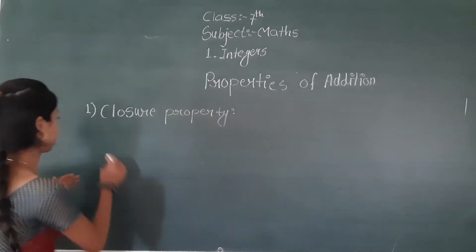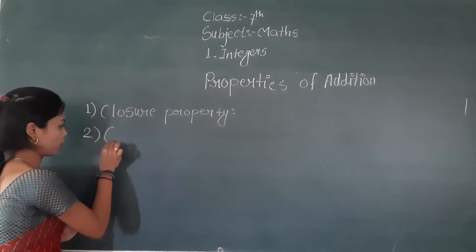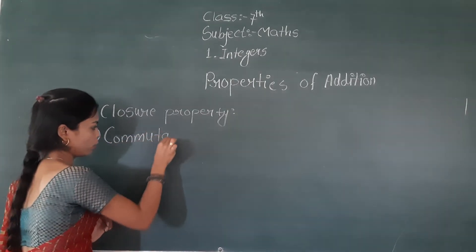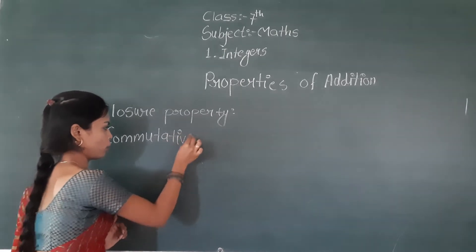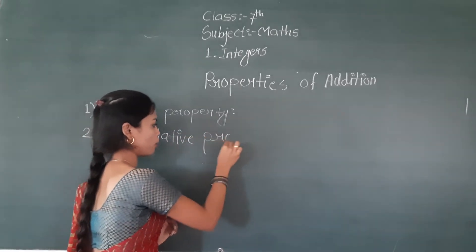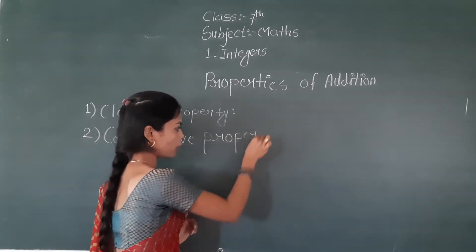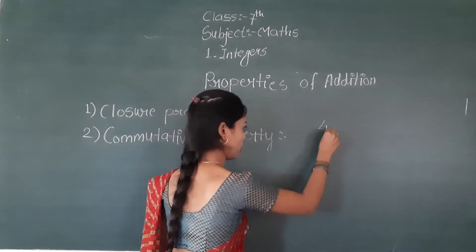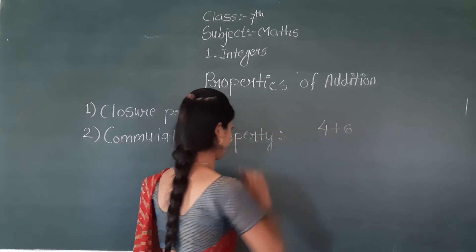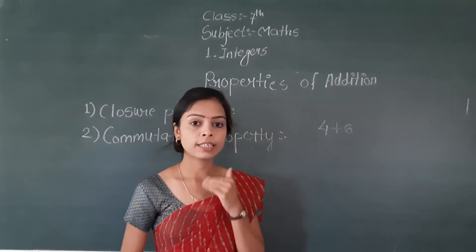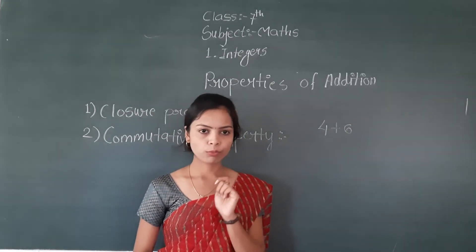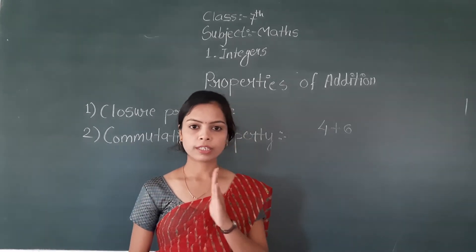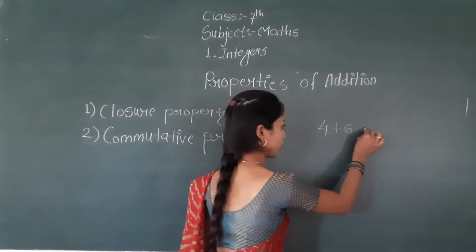Now we will look at the next property — the commutative property. What is the commutative property? First of all, tell me: what is four plus six? What will be our answer?